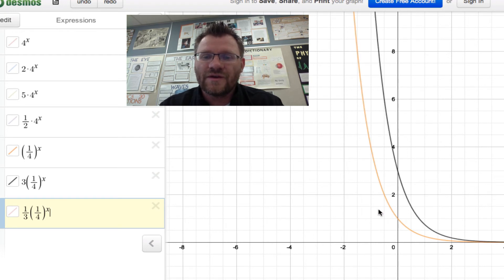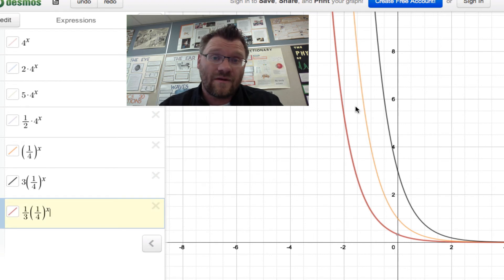If I multiply that thing by 3, it just moves that y-intercept up to the 3 again. If I multiply that whole thing by a third, it just changes that y-intercept and makes it a third instead. So it's the base of the function that determines whether it's increasing or decreasing. Other than that, a lot of the characteristics just remain the same.